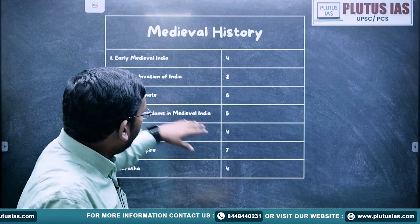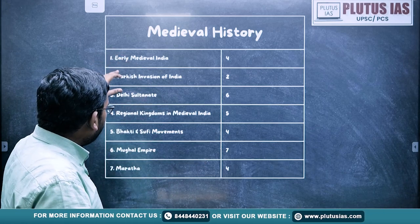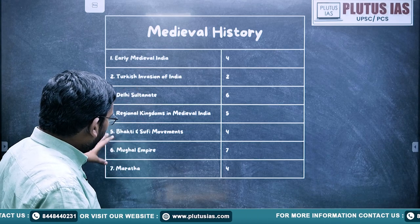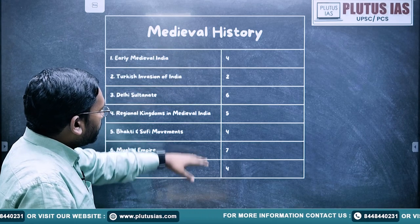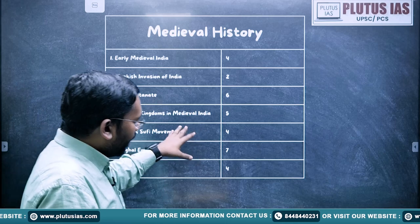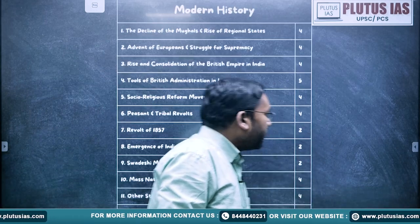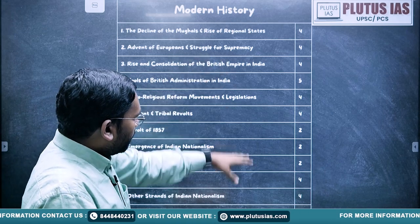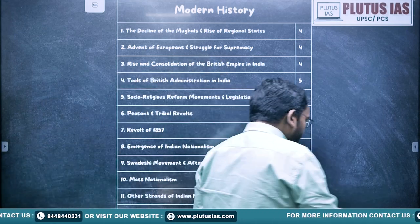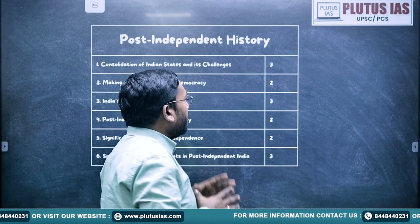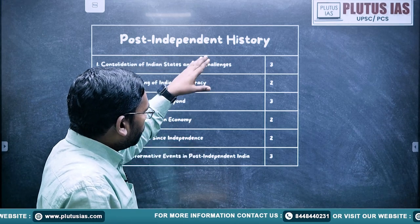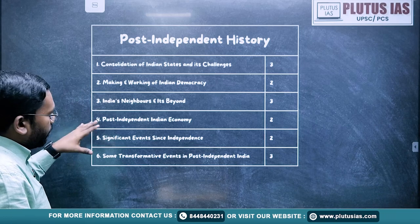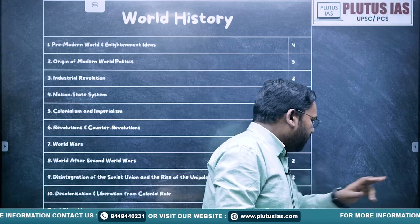For Medieval India, we have seven chapters: Early Medieval India, Turkish Invasion, Delhi Sultanate, Traditional Kingdoms, Medieval India, Bhakti and Sufi Movement, Mughal Empire, and Maratha. These are the major hours of time that each class is going to take. For Modern India, we have a total of 12 chapters. Then we have Post-Independence India covering topics of three hours, two hours, three hours, two hours, two hours, two hours, and three hours.